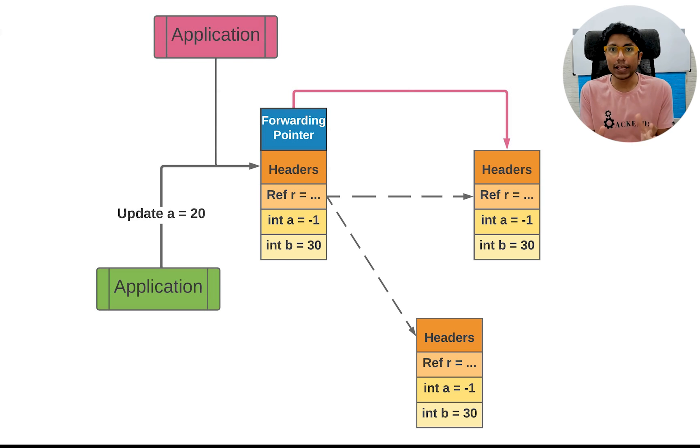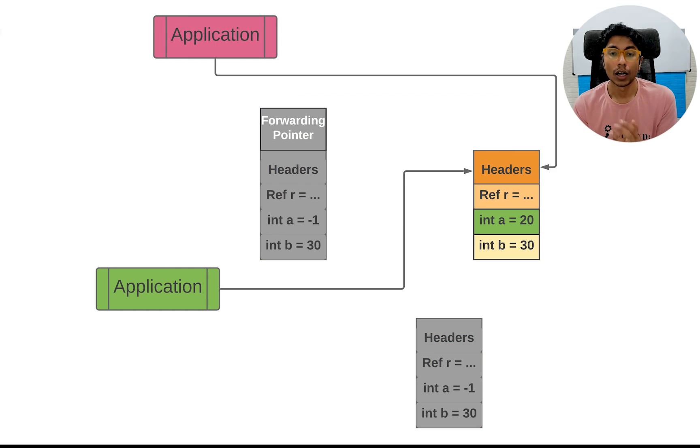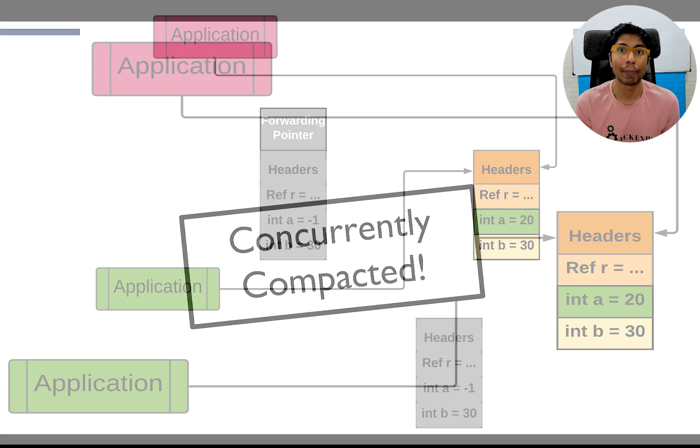And to do this, you have the concept of locking which is a compare and swap operation. One application will win, the other one will lose. The winner gets to make the change, the loser aborts that operation and retries. So on the retry, you see that the forwarding pointer is pointing to this fresh brand new object of a equal to seven. Update the value b equal to 20 in that, and so you have a consistent world view. Eventually the garbage collector will wake up and say that the forwarding pointer is pointing to this new object. The other objects can be eliminated. So this way you have concurrent compaction also.